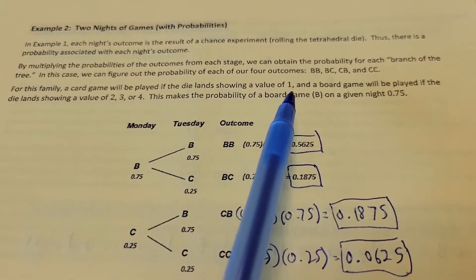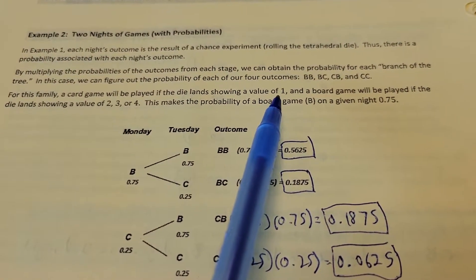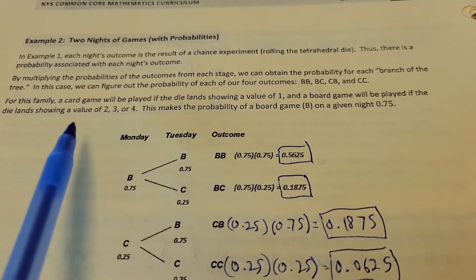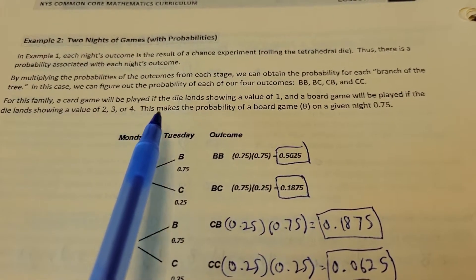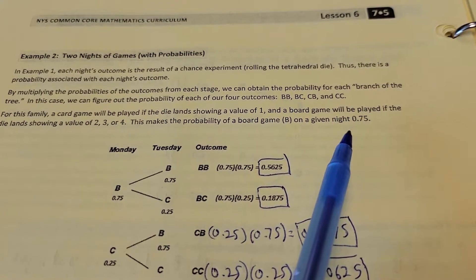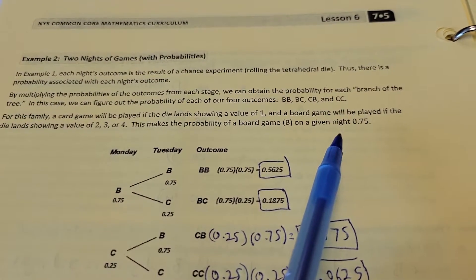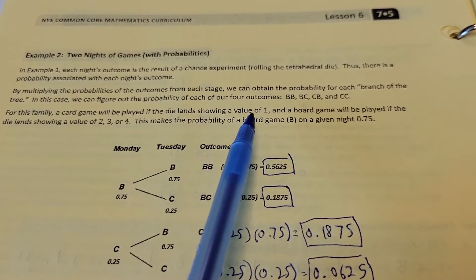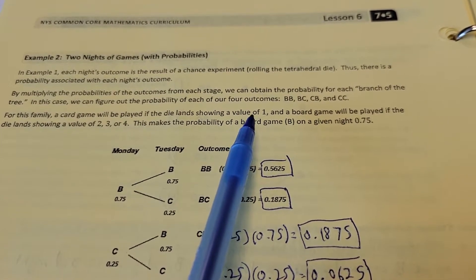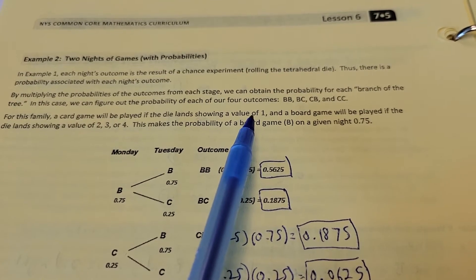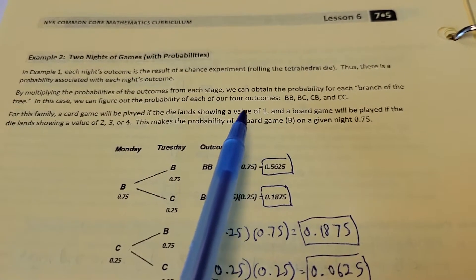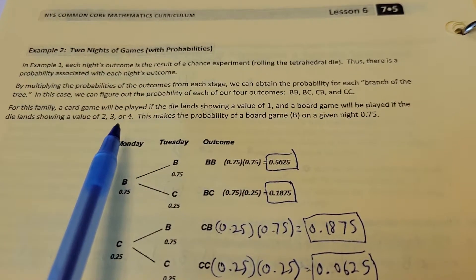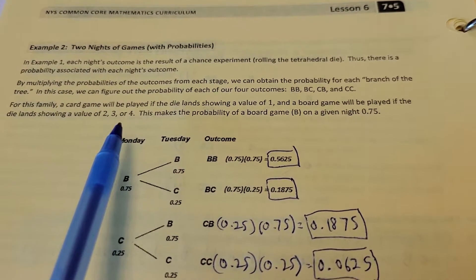For this family, a card game will be played if the die lands showing a value of 1. So if you roll a 1, you're going to play a card game that night. A board game will be played if the die lands on a 2, 3, or 4. This makes the probability of a board game on a given night 0.75, or 3 out of 4.